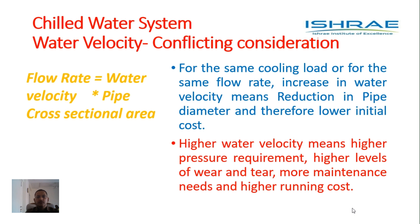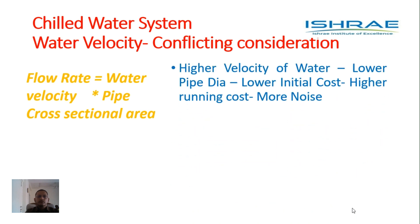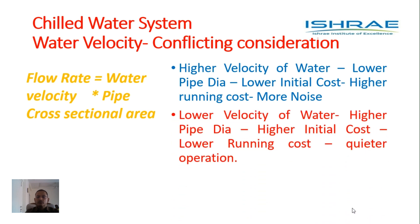It is for us to decide which one we want or where we make a compromise. Higher velocity of water leads to lower pipe diameter and lower initial cost, but it also leads to higher running cost and more noise. Lower velocity of water, on the other hand, leads to higher pipe diameter and higher initial cost, but lower running cost and quieter operation.